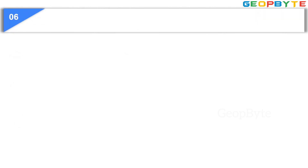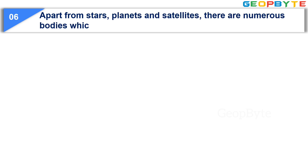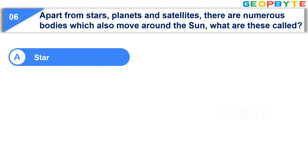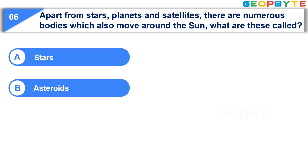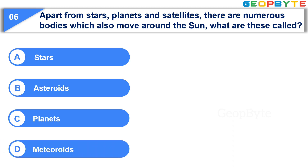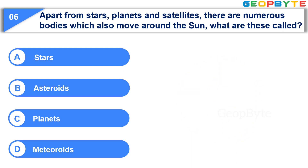Moving to the next question: Apart from stars, planets, and satellites, there are numerous bodies which also move around the sun. What are these called? Option A: Stars. Option B: Asteroids. Option C: Planets. Option D: Meteoroids. Your time starts now. Your time is up and the correct answer is Option D: Meteoroids.